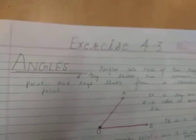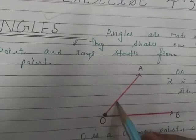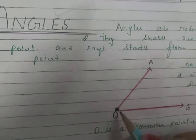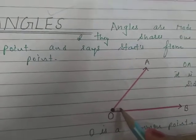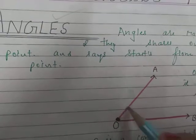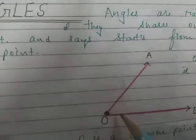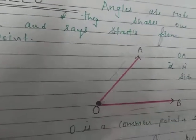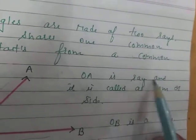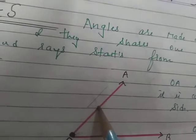Angles have two rays and one common point. Look at the picture shown on your screen — there is an angle where one point is O, which is the common point. You can see two rays OA and OB. OA is also called a ray and it is called a face, or we can also call them sides and arms.